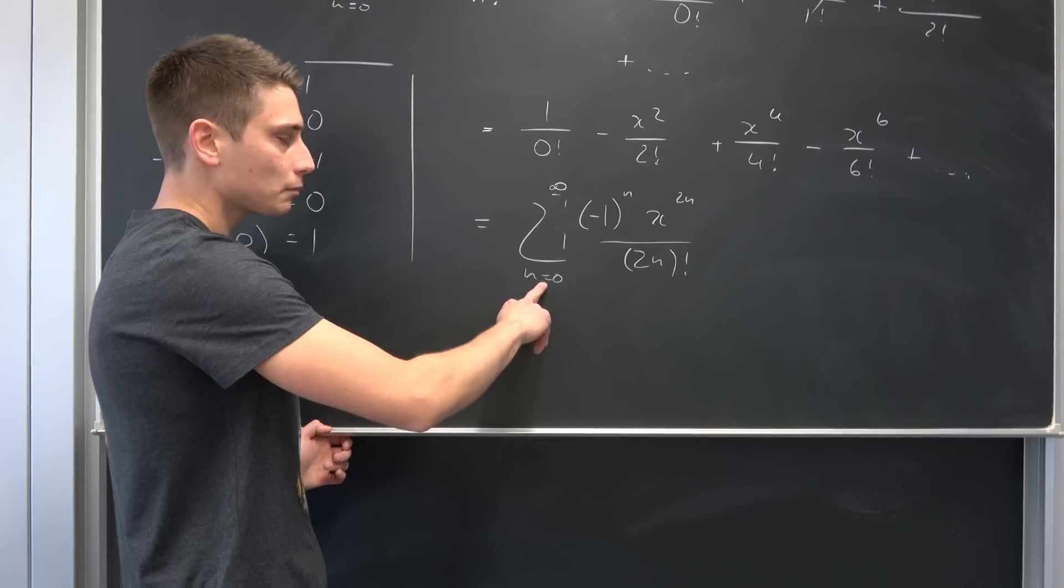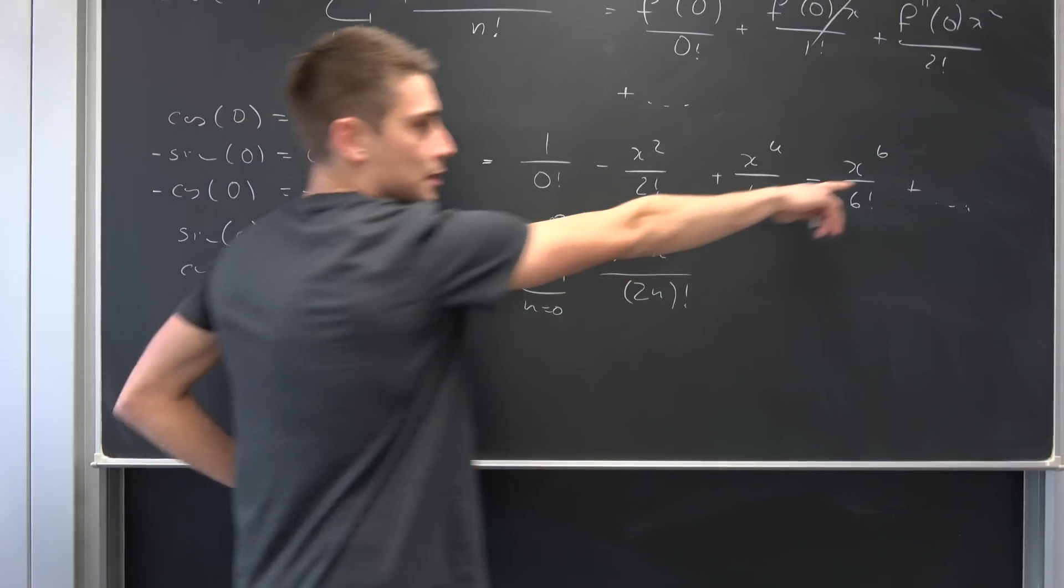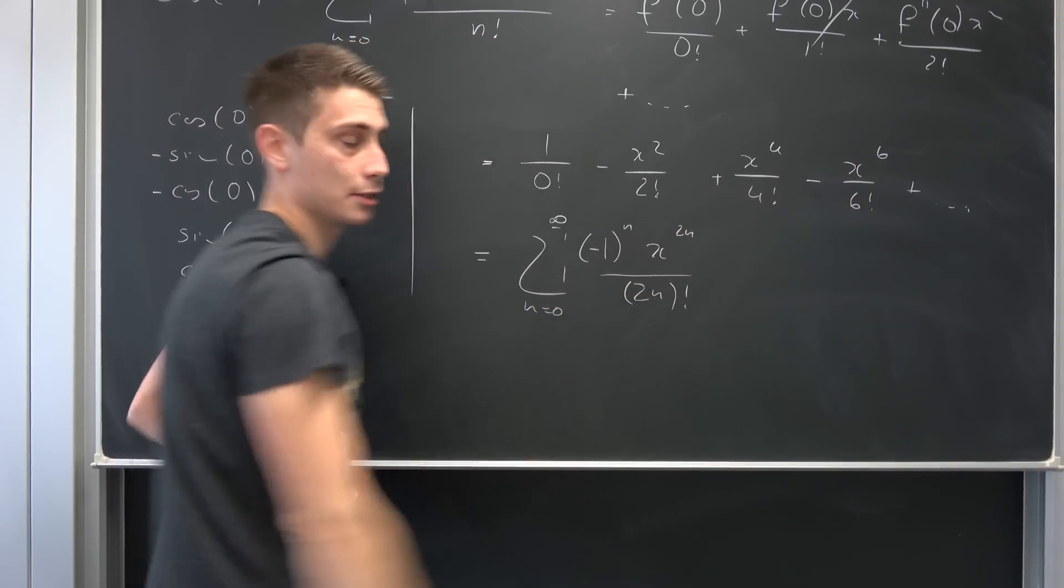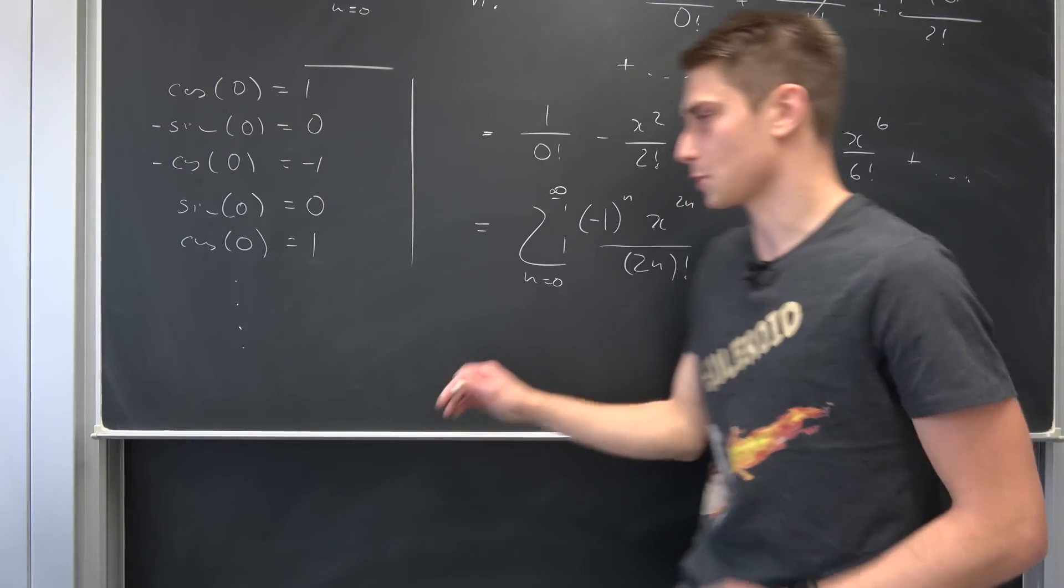It does fit. Negative one to the third power for example, well this iteration right here is negative one. So you see this does work out. And this right here is just our Taylor series expansion of the cosine. It's as easy as it is.